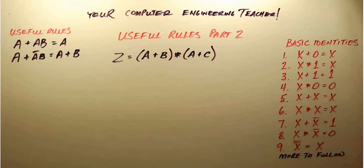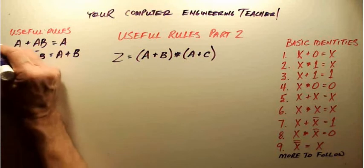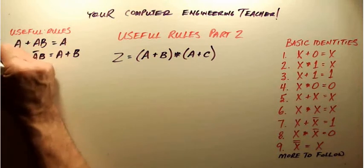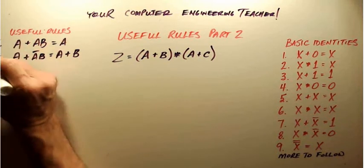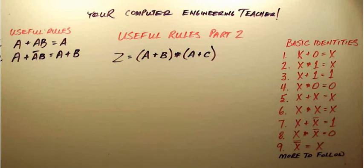Hi everyone and welcome back. In the last video we looked at what we called some useful rules. We used our basic identities to come up with rules we've got over here on the left hand side. We'll call this rule number one and rule number two. Those useful rules are just going to help us later on when we simplify more complex Boolean equations.